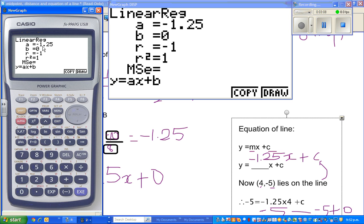That's what we got. A is the gradient, negative 1.25, and the y-intercept is 0. Now, you can also check.